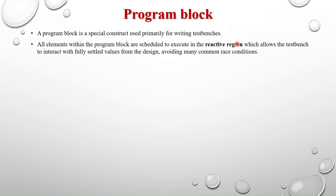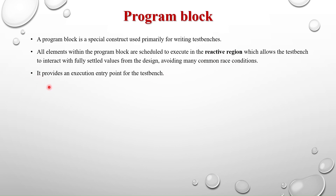Why use a program block and not a module? Because all elements within the program block are scheduled to execute in the reactive region, which allows the testbench to interact with fully settled values from the design, avoiding common race conditions. The module executes in the active region set, and the program block executes in the reactive region set, so we get fully settled values.